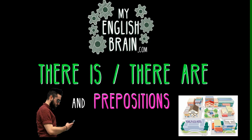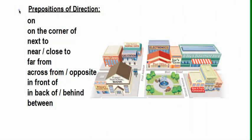Hello again, guys, and welcome back to my English Brain. Today we are talking about 'there is,' 'there are,' and prepositions. Let's get started with prepositions of direction: on, on the corner of, next to, near or close to, far from, across from or opposite, in front of, in back of or behind, and between.